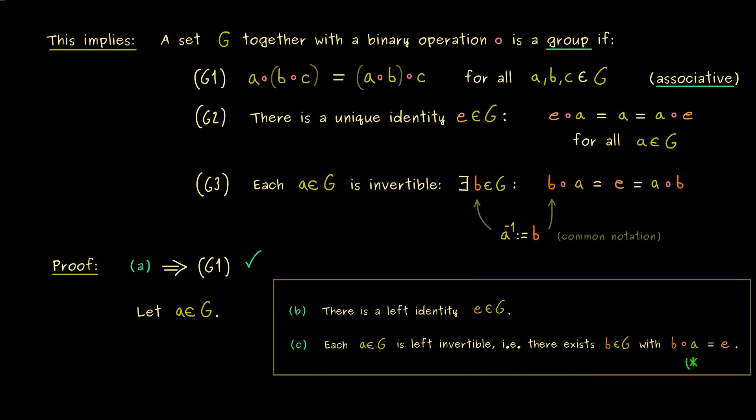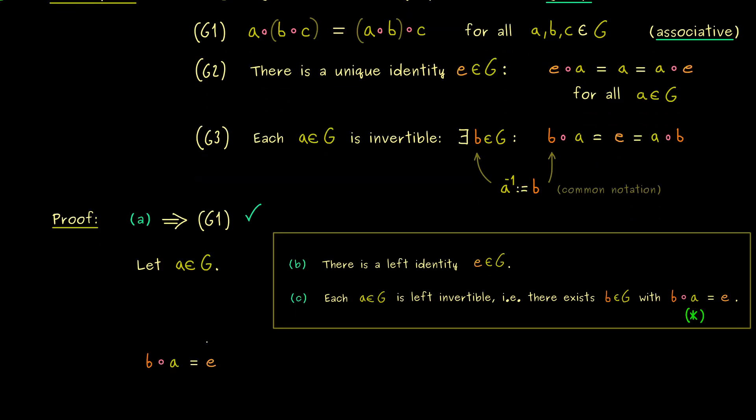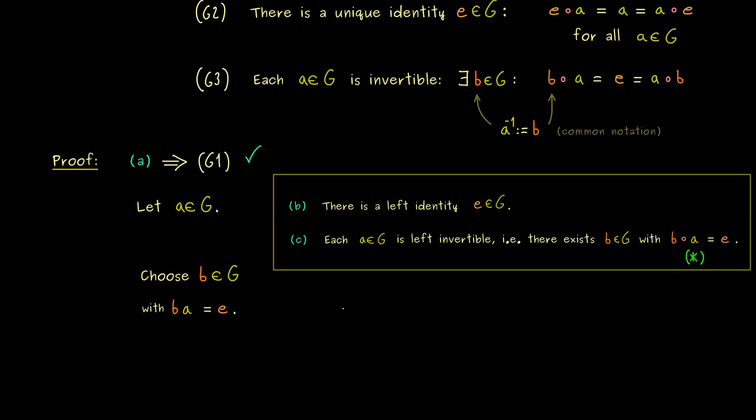Therefore, let's call this equation here star and let's use it for the next step. And now the first thing we should do here is to omit the symbol of the binary operation all together, because then you see everything is much shorter. So now you see here for the following our b is fixed as a left inverse of a. And now the question is, what can we say about ab?